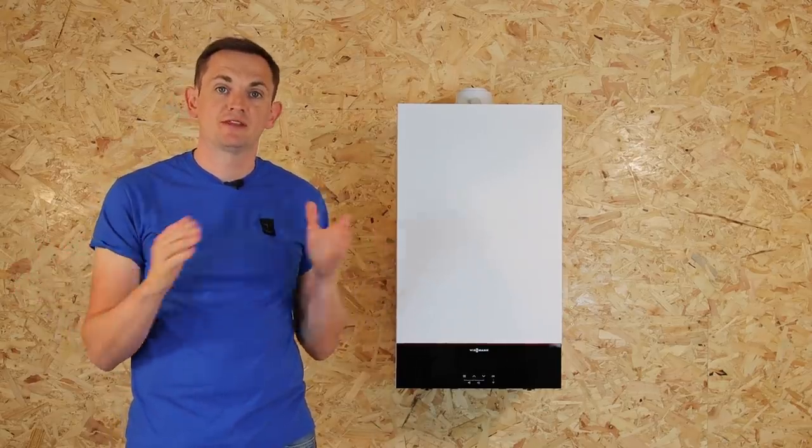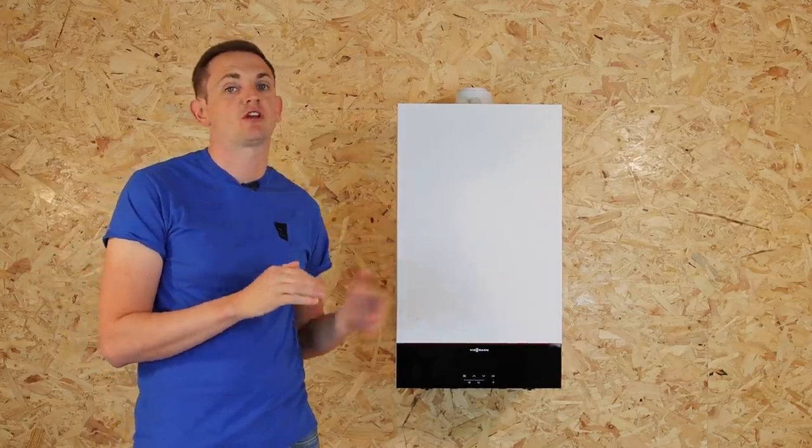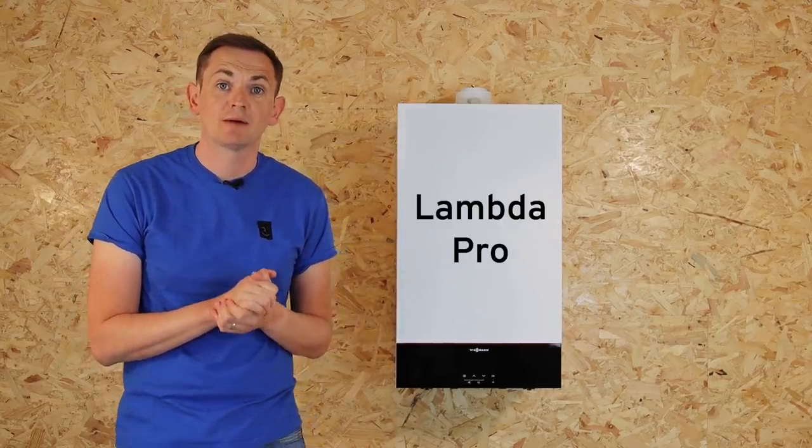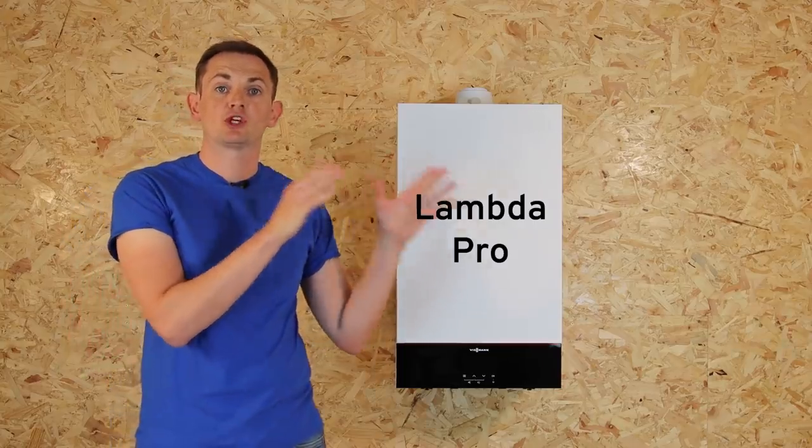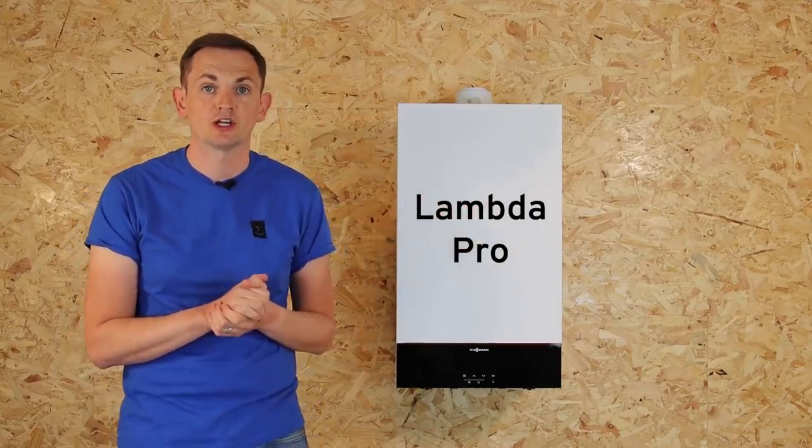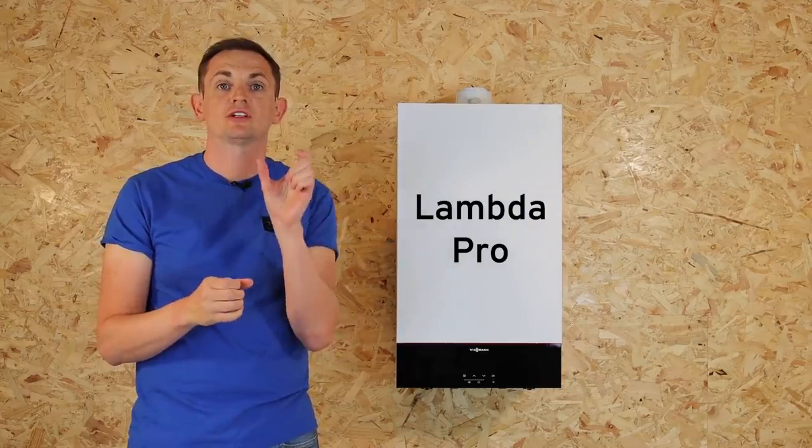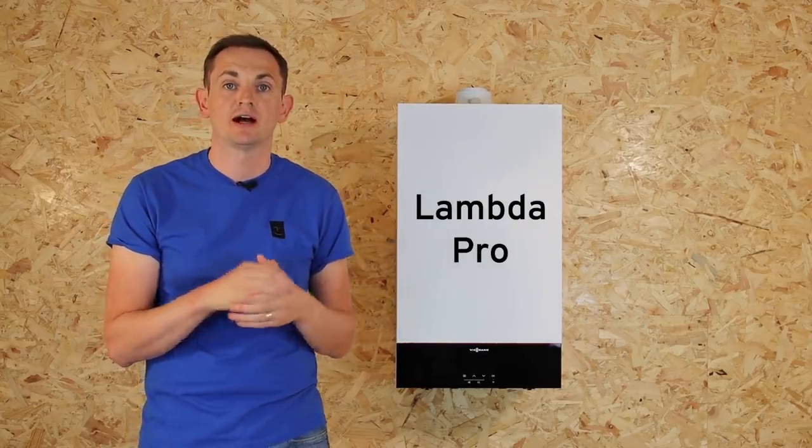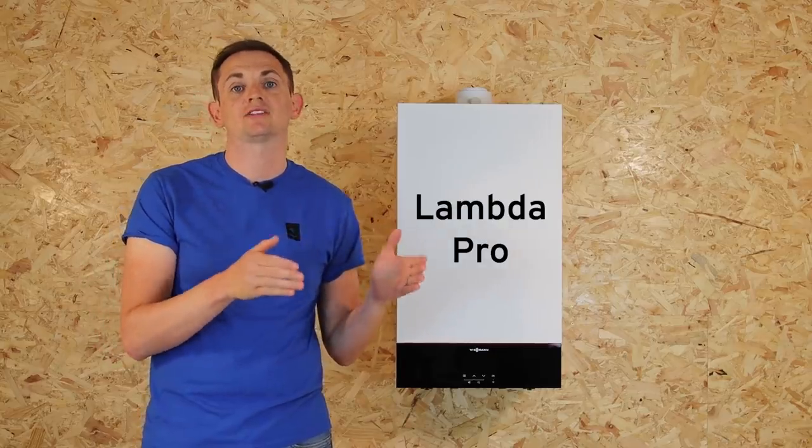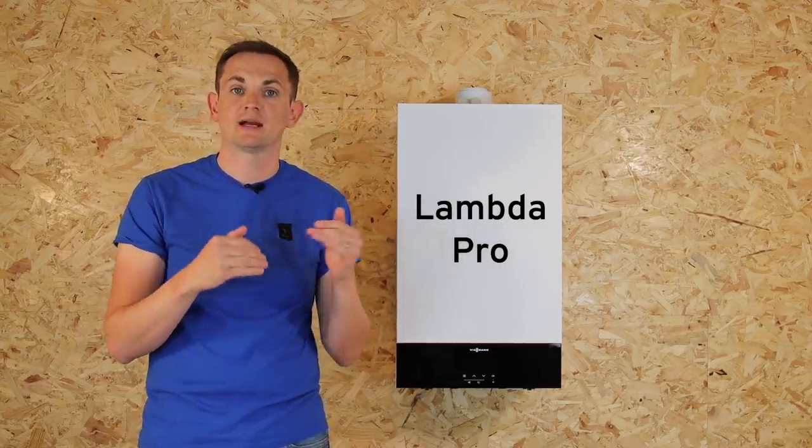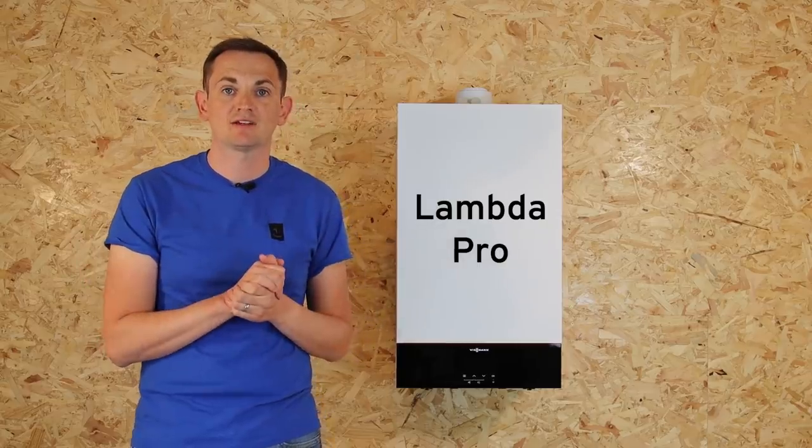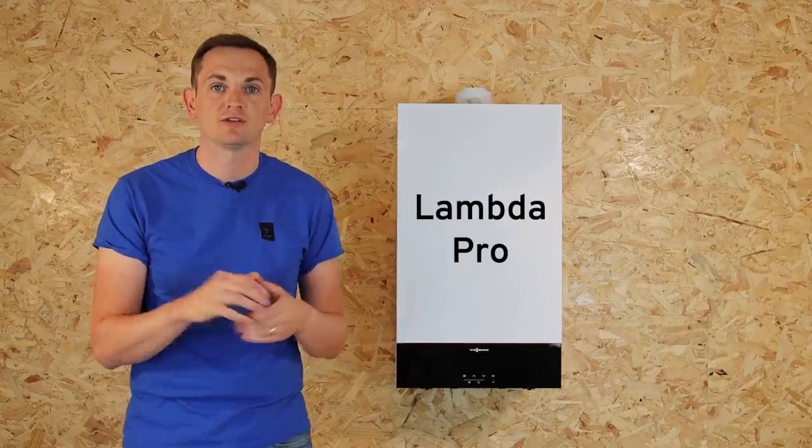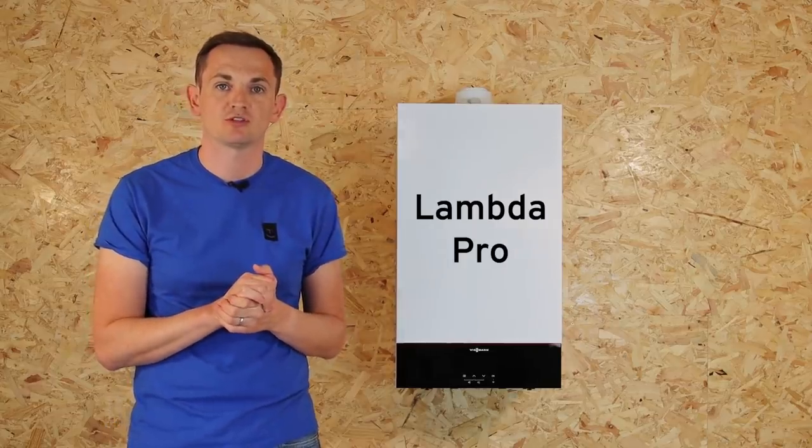So a massive improvement in this boiler over the previous generation of 100 is the fact that it now includes something called Lambert Pro. Lambert Pro is a technology that has come from the 200 model range of products. What this does is the gas valve is constantly adjusting the gas and air mix provided into the burner. Now this is because not all gas is the same. The supply you get at home varies from time to time and also air has different densities depending on the temperature. The boiler detects this and it's constantly adjusting for the best quality and most efficient burn rate.